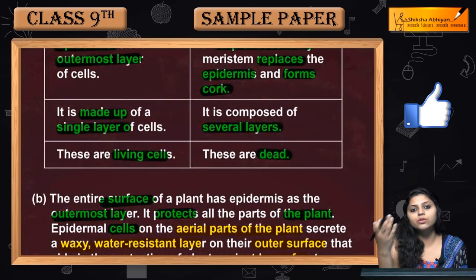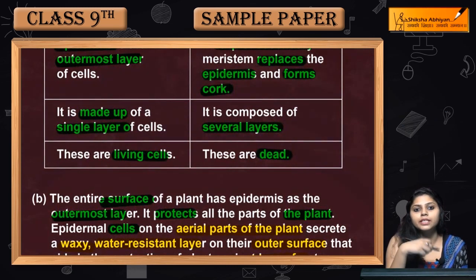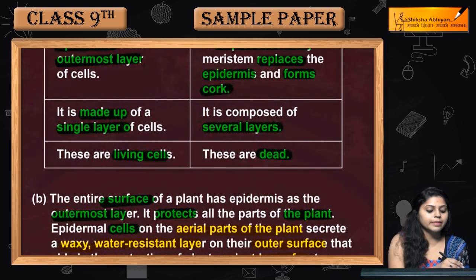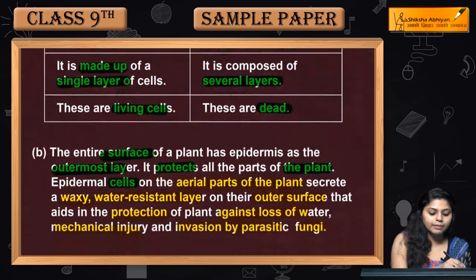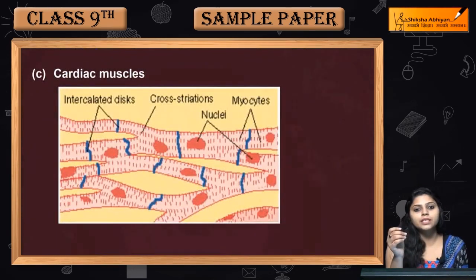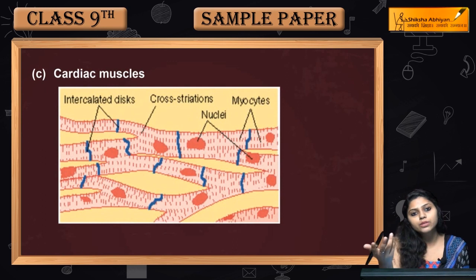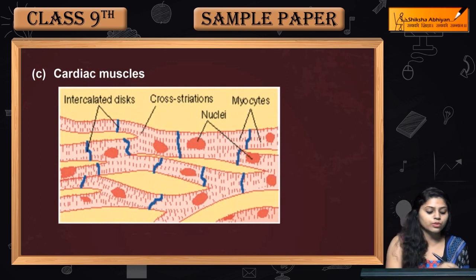They protect against water loss and prevent external substances from entering. Similarly, for the cardiac muscle diagram — cardiac muscle has intercalated discs, a branching pattern, nuclei, myocytes, and striations. So this was about question number 18 and related questions.